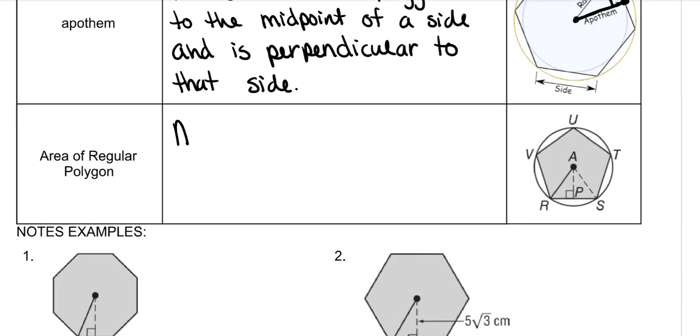To find the area of a regular polygon, you take half the apothem—so remember that this is A—times P, and P is the perimeter.